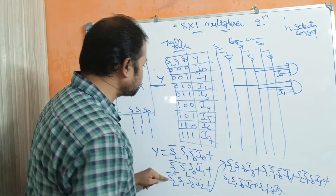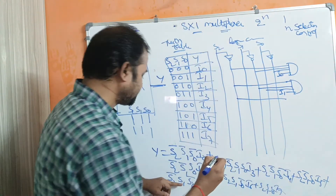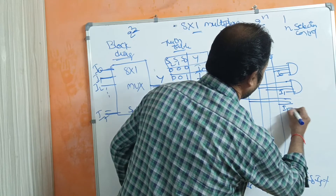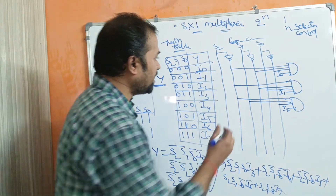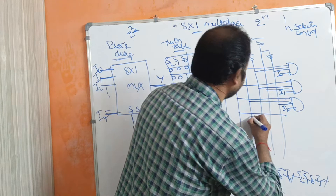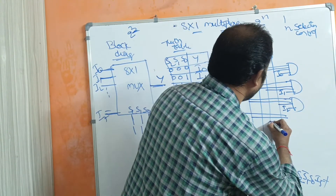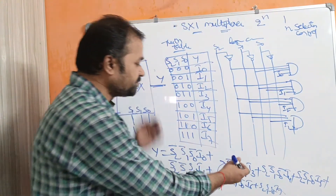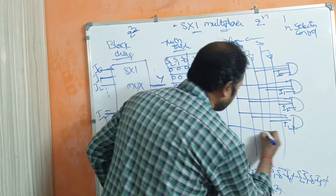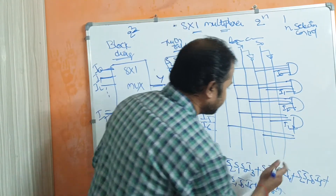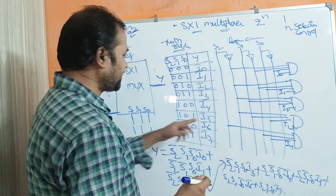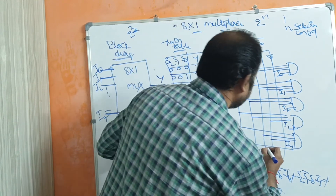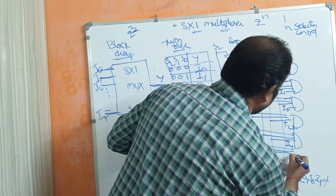The third AND gate takes S2_bar, S1, S0_bar, and i2. The fourth AND gate takes S2_bar, S1, S0, and i3. The fifth AND gate takes S2, S1_bar, S0_bar, and i4. The sixth AND gate takes S2, S1_bar, S0, and i5. Likewise we need two more AND gates for i6 and i7.